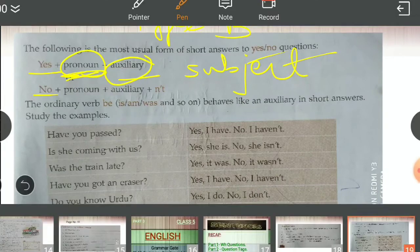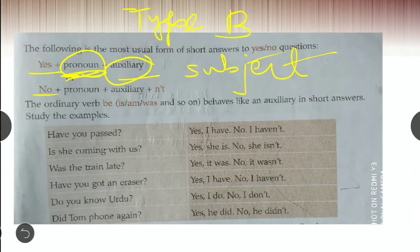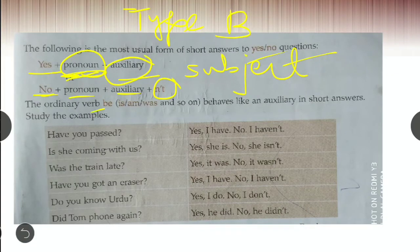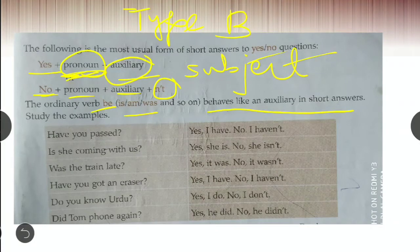If you are giving no as the answer, no, pronoun, auxiliary, and n apostrophe T is necessary to write to show that your answer is no. The ordinary verb be, these are called be verbs that you know, behaves like an auxiliary in short answers.